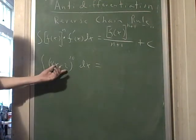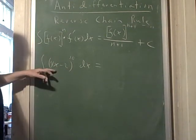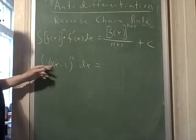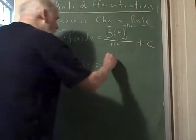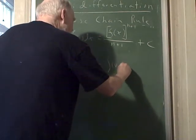I look at this and I say, I've got f of x, this 4x minus 2 to the 10th power, and I need f prime in order to do it. And f prime is 4. Well, how am I going to do that?